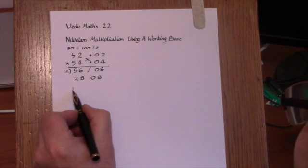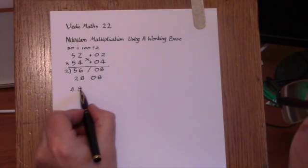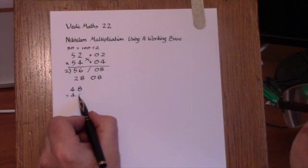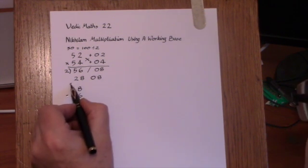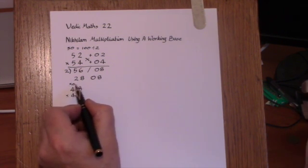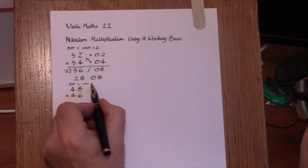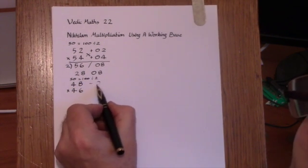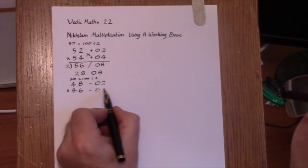Let's take another example of 48 multiplied by 46. Again, using the working base of 50 as 100 divided by 2. We can look at the deficiencies here of 02 and 04.